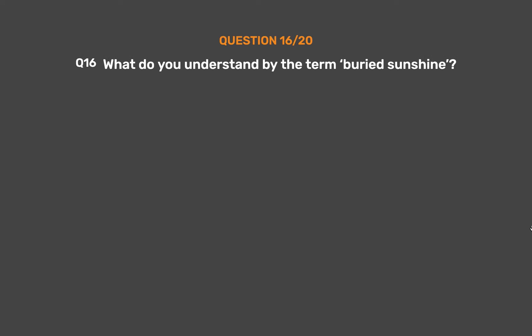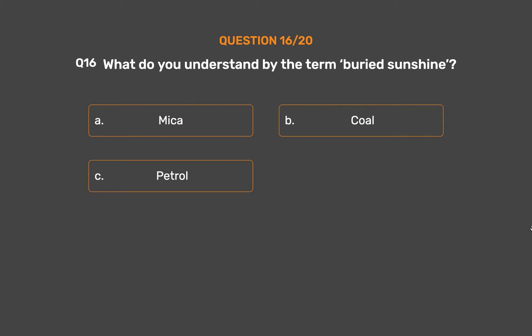Question 16: What do you understand by the term 'buried sunshine'? Option A: Mica. Option B: Coal. Option C: Petrol. Option D: None of these.